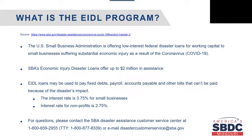The SBA's Economic Injury Disaster Loan offers up to $2 million in assistance. These loans may be used to pay fixed debts, payroll, accounts payable, and other bills that can't be paid because of the disaster's impact. The interest rate for small businesses is 3.75% and the interest rate for nonprofits is 2.75%. For questions, you may contact the SBA Disaster Assistance Customer Service Center at the phone number or email provided on this slide.